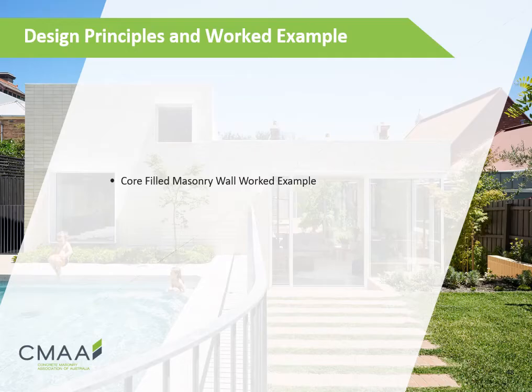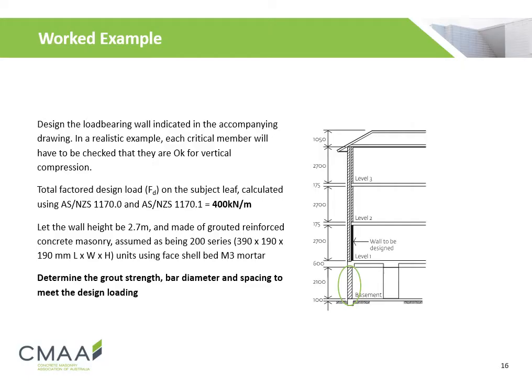We will now go through a working example designing a reinforced concrete masonry wall. This example requires us to design a load-bearing wall with a factored design loading of 400 kN per meter. The wall is 2.7 meters high, made of standard concrete masonry units using face shell bedding of M3 mortar. We will determine the compressive capacity of the wall and check whether it is greater than the design load.